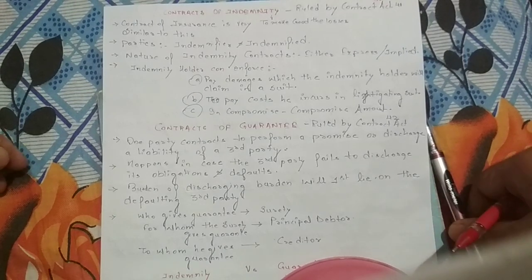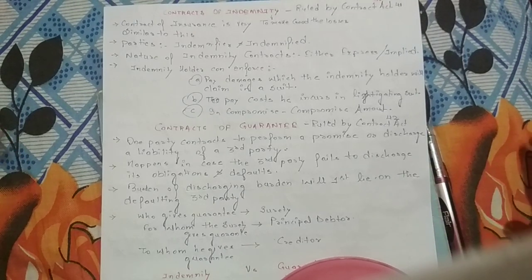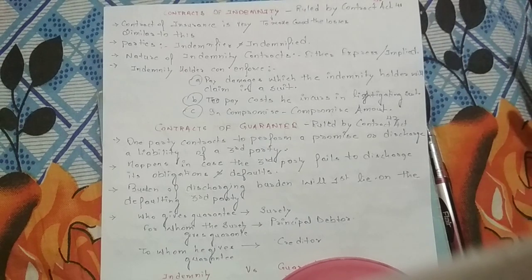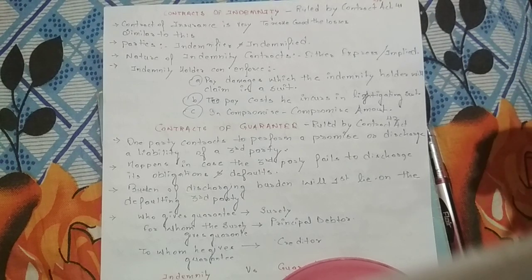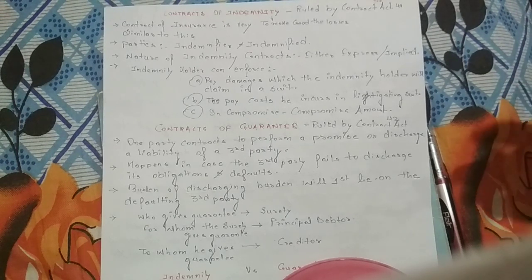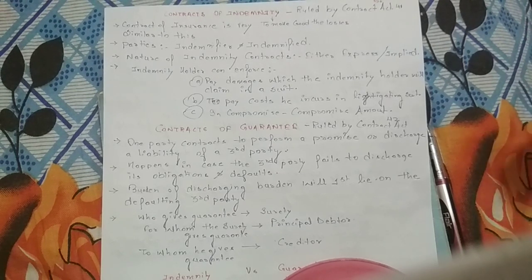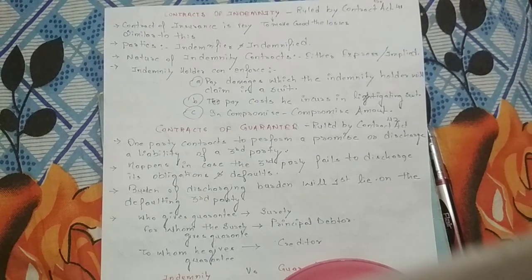In this video I will complete chapters 41, 42, 43, and 44, starting with chapter 41: contracts of indemnity. The simple meaning of indemnity is to make good the loss. Contract of insurance is very similar to this. The parties involved are the indemnifier and the indemnified. The one who gives the guarantee is called the indemnifier — for example, LIC gives us insurance, so LIC is the indemnifier. The one who is covered under the insurance is called the indemnified.